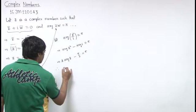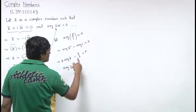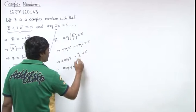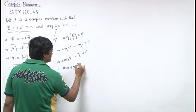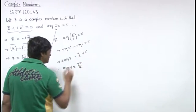That means argument of z is pi plus pi by 2, which is 3 pi by 2, upon 2, that is 3 pi by 4.